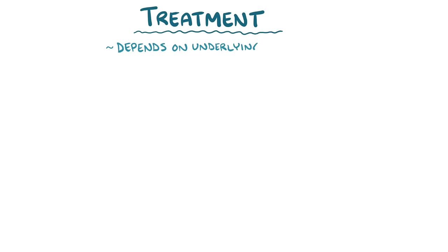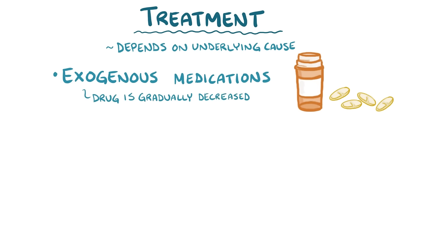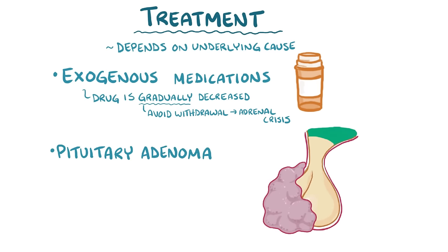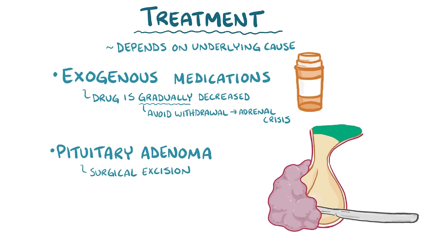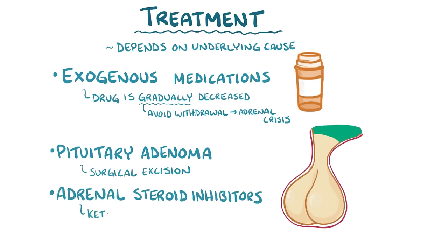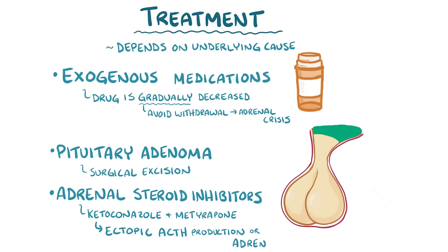Treatment of Cushing syndrome depends on the underlying cause. If it's due to exogenous medications, then the offending drug is gradually decreased and eventually stopped if possible. It's important to avoid sudden steroid withdrawal, because that can cause an adrenal crisis which is life-threatening—the adrenal glands might be atrophied and might need months to recover fully, and during that time the body needs the exogenous steroids to function normally. If Cushing syndrome is due to a pituitary adenoma like in Cushing disease, then surgical excision of the adenoma might be needed. Alternatively, medications like adrenal steroid inhibitors such as ketoconazole and metyrapone can be helpful, especially for cases of ectopic ACTH production or adrenal carcinomas that have already spread.